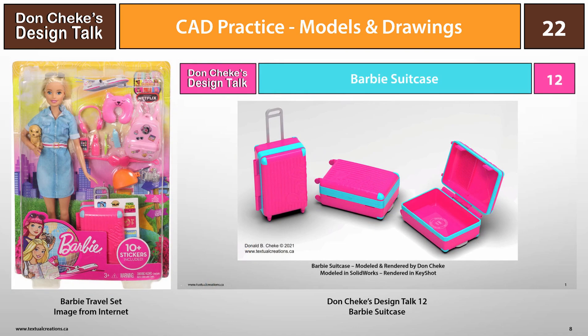Check out your kids' or grandkids' toy boxes too — you'd be surprised what you can find. This Barbie suitcase was one such thing I found among my granddaughter's things. It seemed somewhat complex for such a small item, but interesting enough to model. I actually modeled it twice — once in SolidWorks and once in TurboCAD — to see how modeling procedures would differ. Be sure to check out Design Talk number 12 for a closer look.